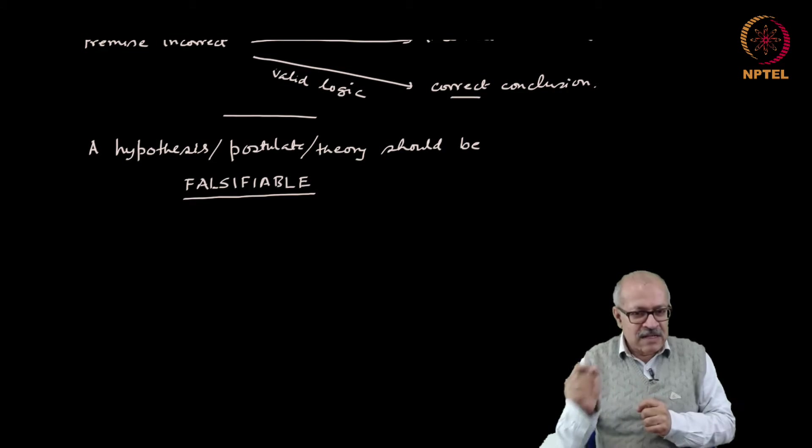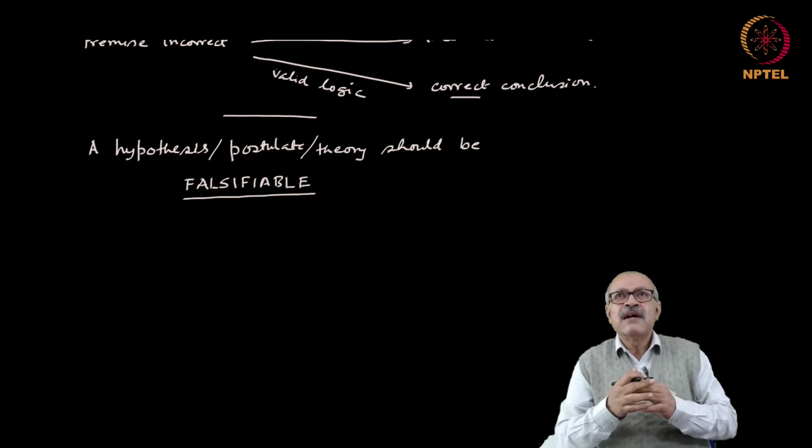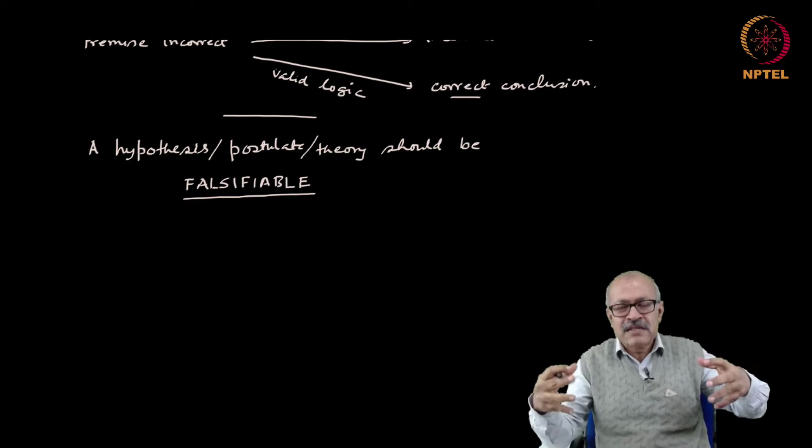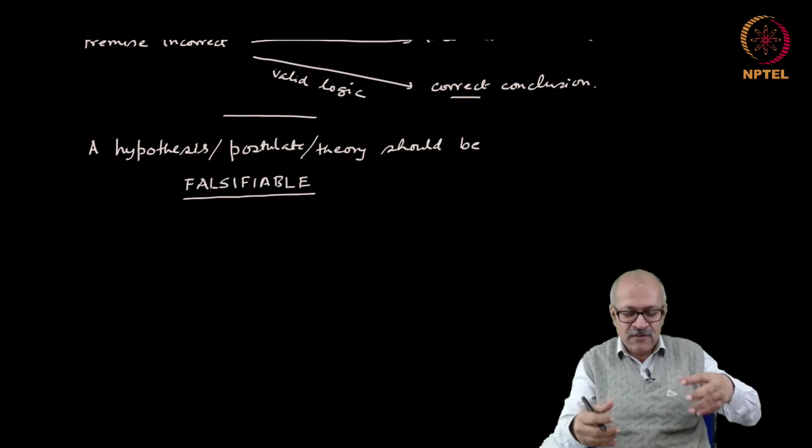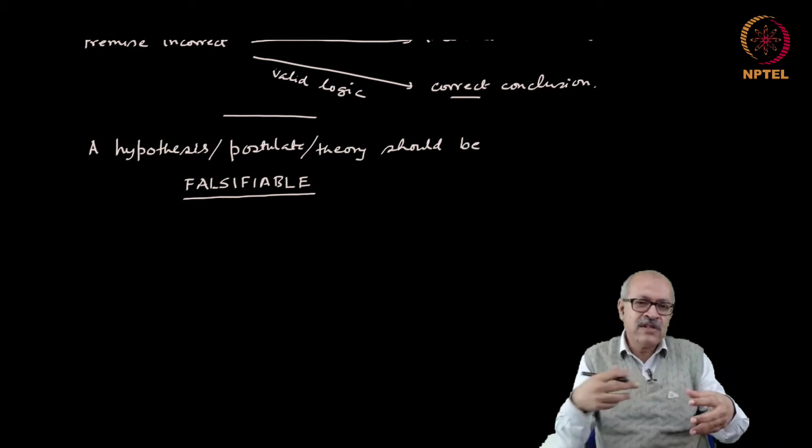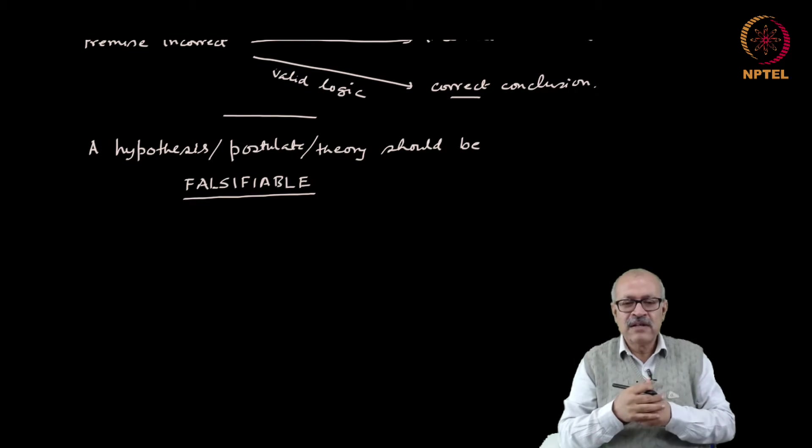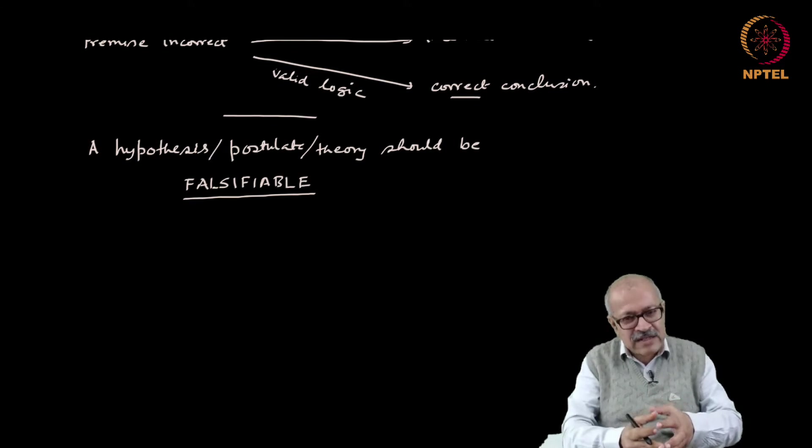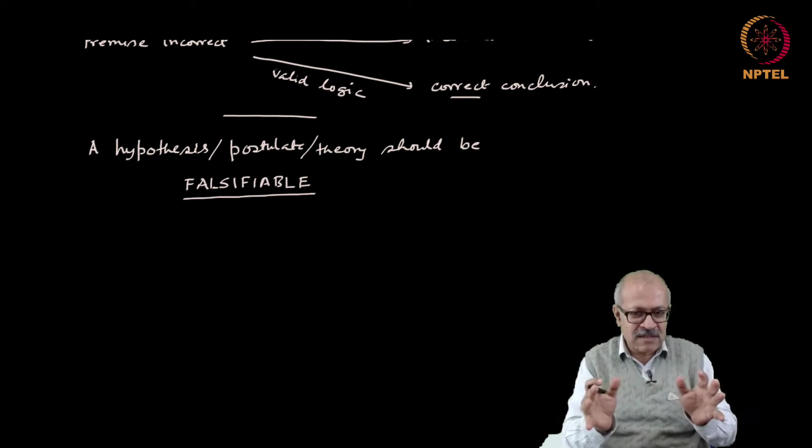Let us take the big bang theory as an example. The big bang theory said that all the galaxies are receding from each other, and therefore if you look backwards they were closer to each other. If you look further backwards they were further closer to each other, and that way if you extrapolate in time you reach a condition when they were all together in a very compact object, ideally of infinite density, infinite temperature, that kind of situation. From there it has expanded to create today's universe. That is the structure in very brief.